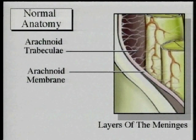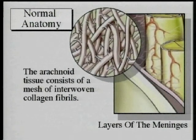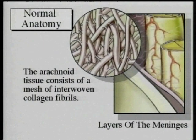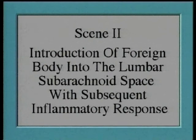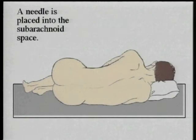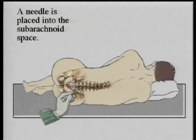The finest membrane is the pia. The next finest membrane is the arachnoid, shown here in close-up. It consists of a mesh of interwoven collagen fibrils, much like tissue paper would appear under a microscope. We will now see the introduction of a myelographic agent through a needle placed in the lumbar spine for the purposes of myelography. This is called a lumbar puncture.